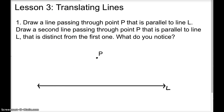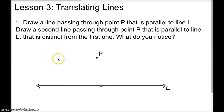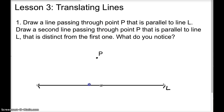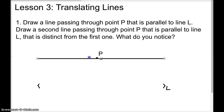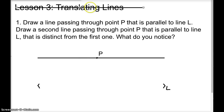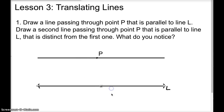What you'll need to do is take a piece of computer paper, trace the line and point P onto your paper, and then slide it up so that the line goes through P. I'll drag it straight up — and that's what yours should look like, with the original line still at the bottom.